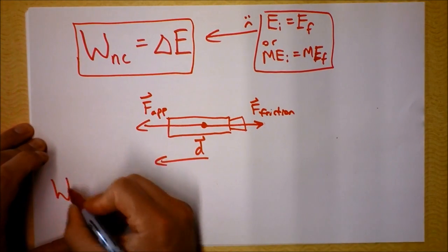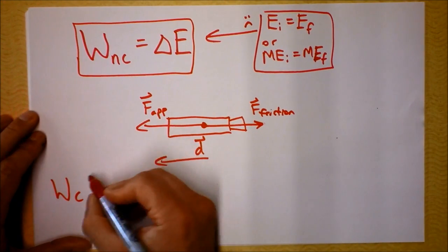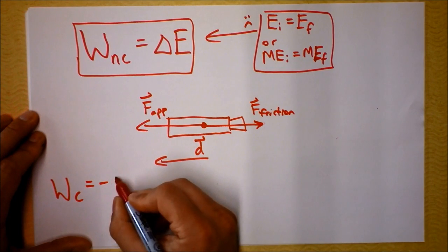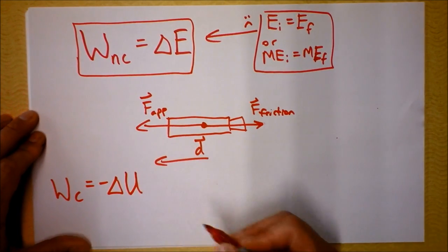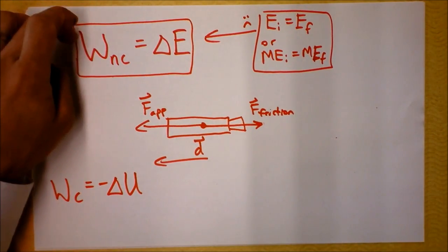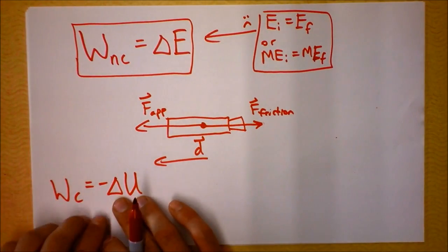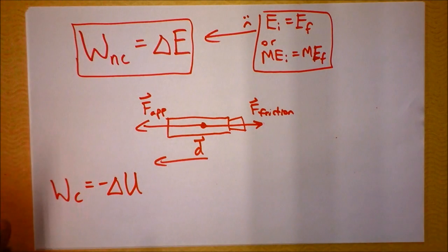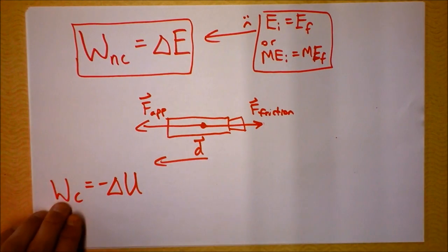We also had the statement that a conservative force, when it does work, the system loses potential energy. It may be that it's converting it to kinetic, or it may be that it's then losing that potential energy into heat. But we know that whenever a conservative force does work, we are losing potential energy.